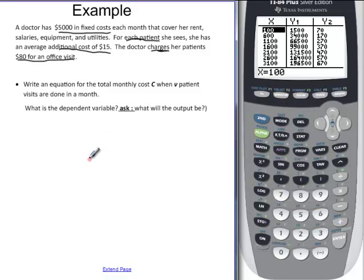So let's look at this problem. It asks us to write an equation for the total monthly cost when V patient visits are done in a month. And we want to know the dependent variable, or what are we trying to solve for. Okay, they're asking us to find costs, so that would be the dependent variable. And what's cost equal to? We'll go back up and look at it. Costs are $5,000 in fixed costs, and they're fixed, so there would be no variable to it. Every month they're going to pay $5,000.